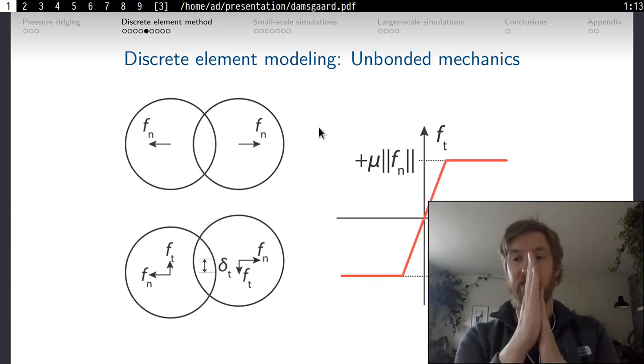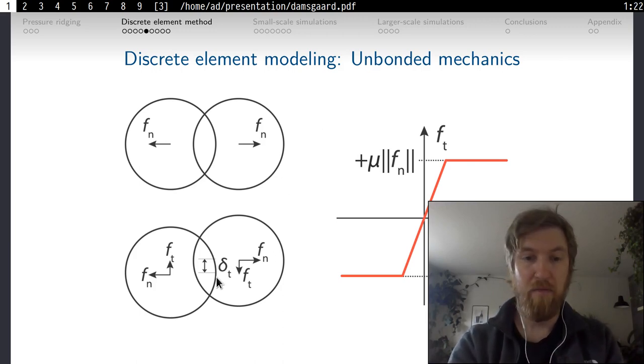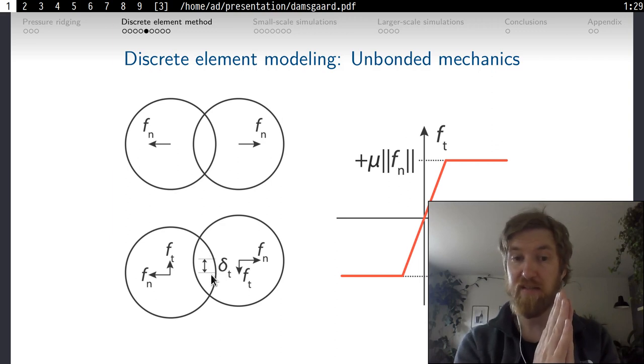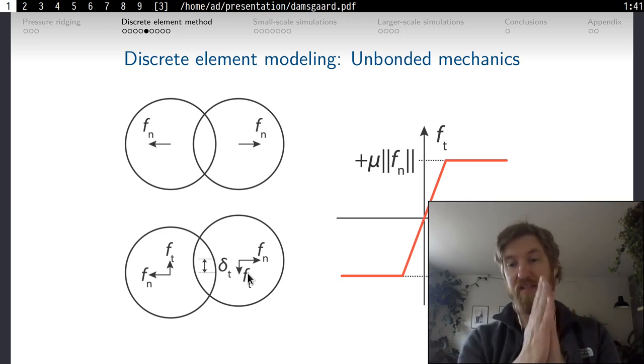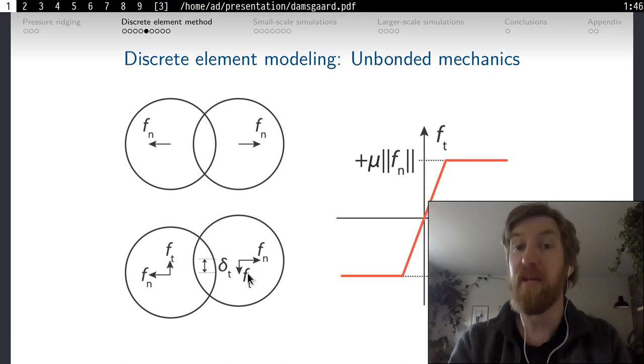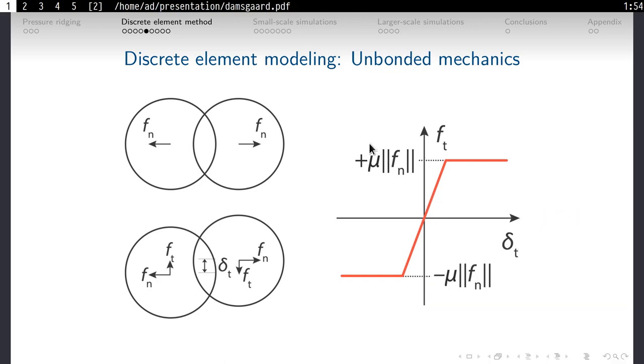For the tangential movements, the grinding of ice flows against each other, we can use similar elastic mechanics. By measuring and keeping track of the contact travel distance between a pair of particles, we can impose a tangential force, Ft, with opposite signs to the participating ice flows. However, this tangential stress and force cannot grow without any upper bounds. For that reason, we usually limit the tangential force by a Coulomb frictional coefficient, called mu here. This means that the tangential force scales linearly with the magnitude of the normal force, such as known from high school frictional slider experiments.